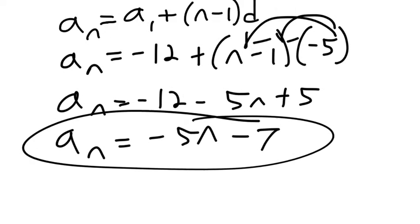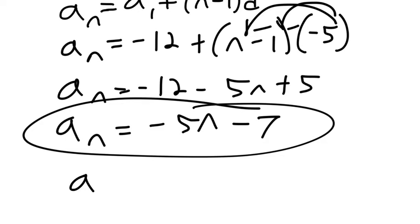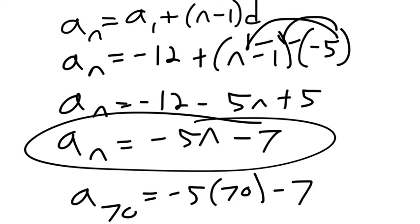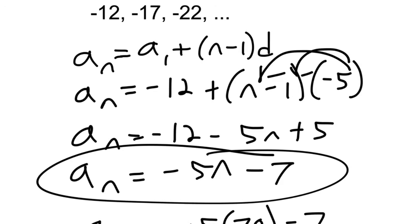Again, when you make the sequence, n has to be in there because if you want to find the 70th term, you plug in 70 in for n. You have that variable so you can plug it in. But that's the nth term sequence. Well, that's the last way to do it.